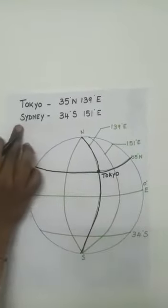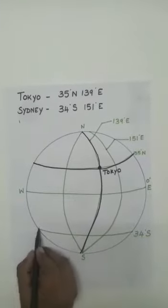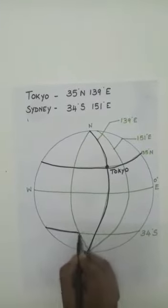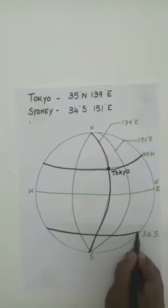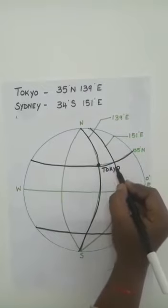Next is Sydney. Sydney's latitude is 34 degrees south and longitude is 151 degrees east.